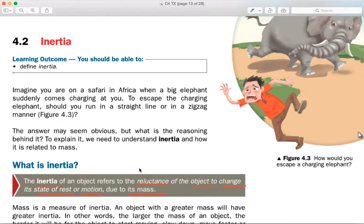an object, if it's moving in a constant velocity in a straight line, it will tend to continue doing that all the way, unless you have a resultant force, external force that acts on it.